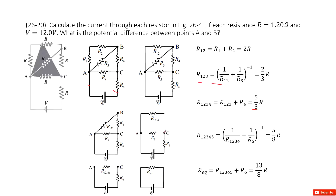From point A to point C, R1.2.3.4 is in parallel with R5. The equivalent resistance R1.2.3.4.5 equals 5R over 8. Finally, the total equivalent resistance is R1.2.3.4.5 plus R6, which gives 13R over 8.